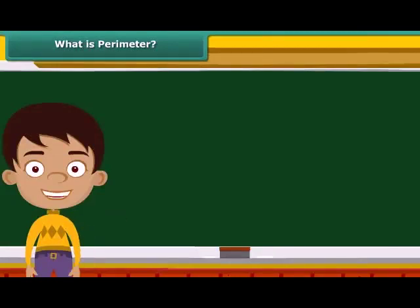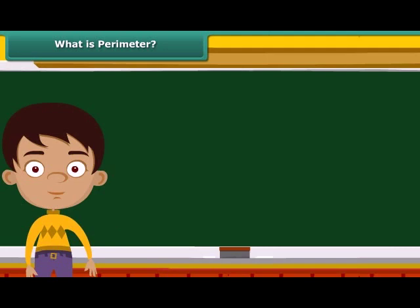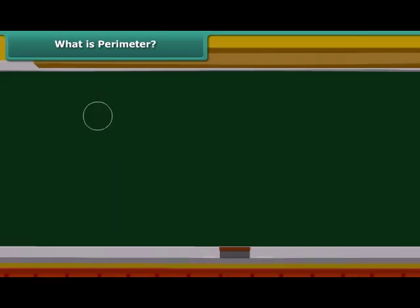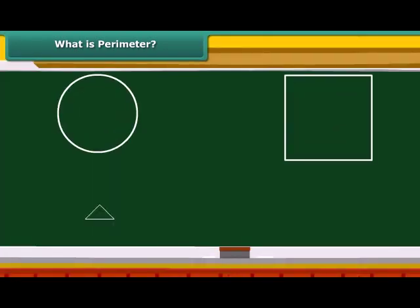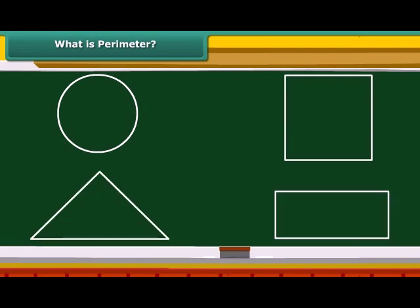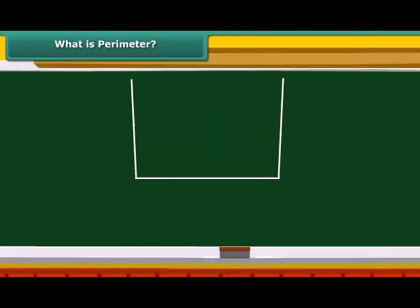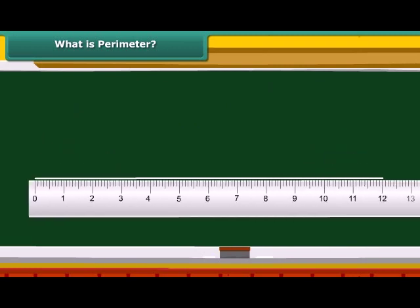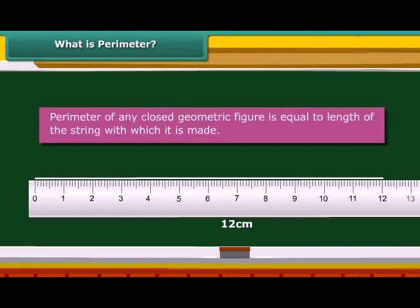Here is a simple technique of measuring the perimeter of a shape. Take a closed geometric shape — such as a circle, square, triangle, or rectangle — made of string. Unroll the string and measure its length. The length of the string is the perimeter of the chosen geometric shape. We can generalize by saying that the perimeter of any closed geometric figure is equal to the length of the string with which it is made.